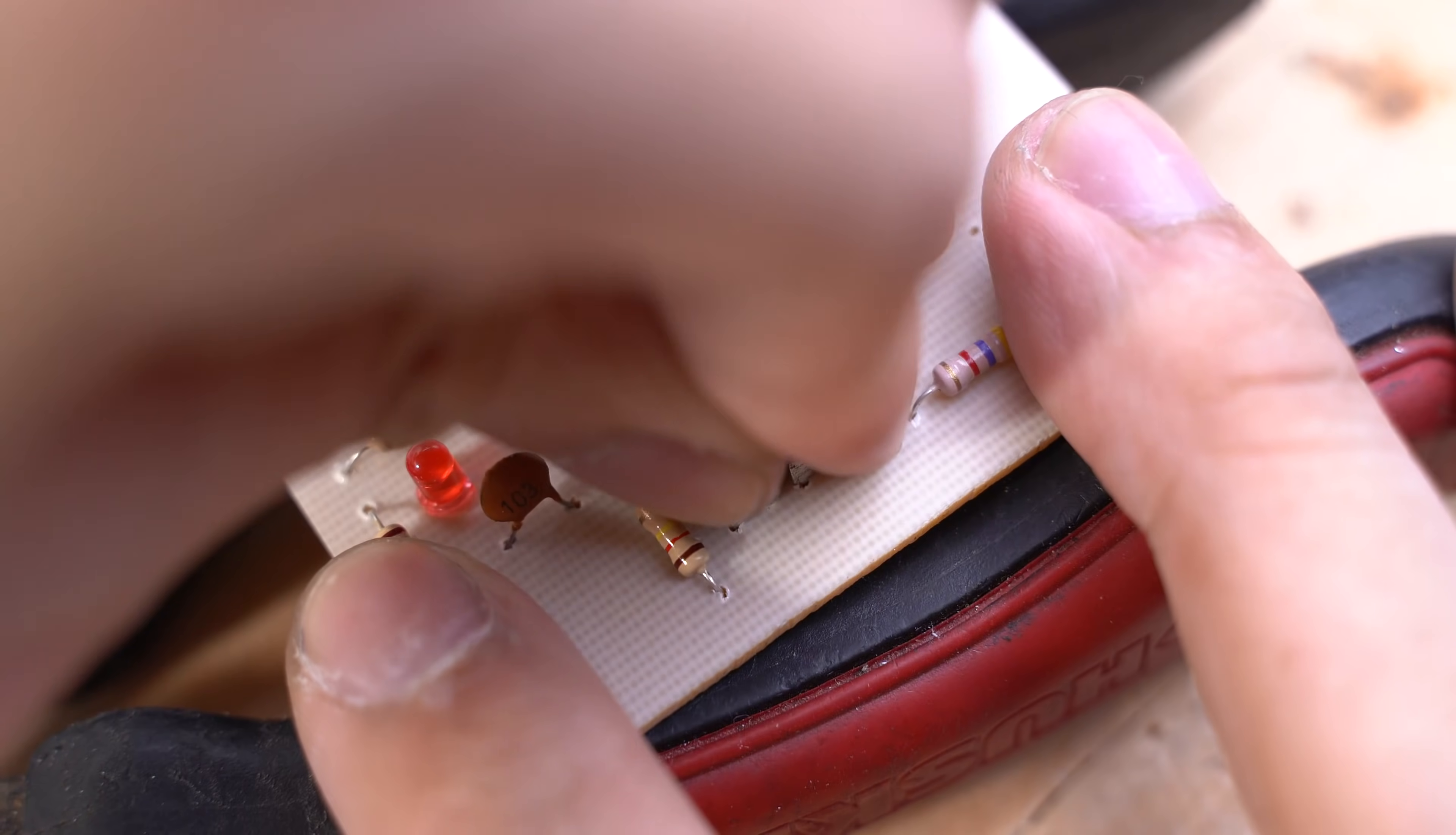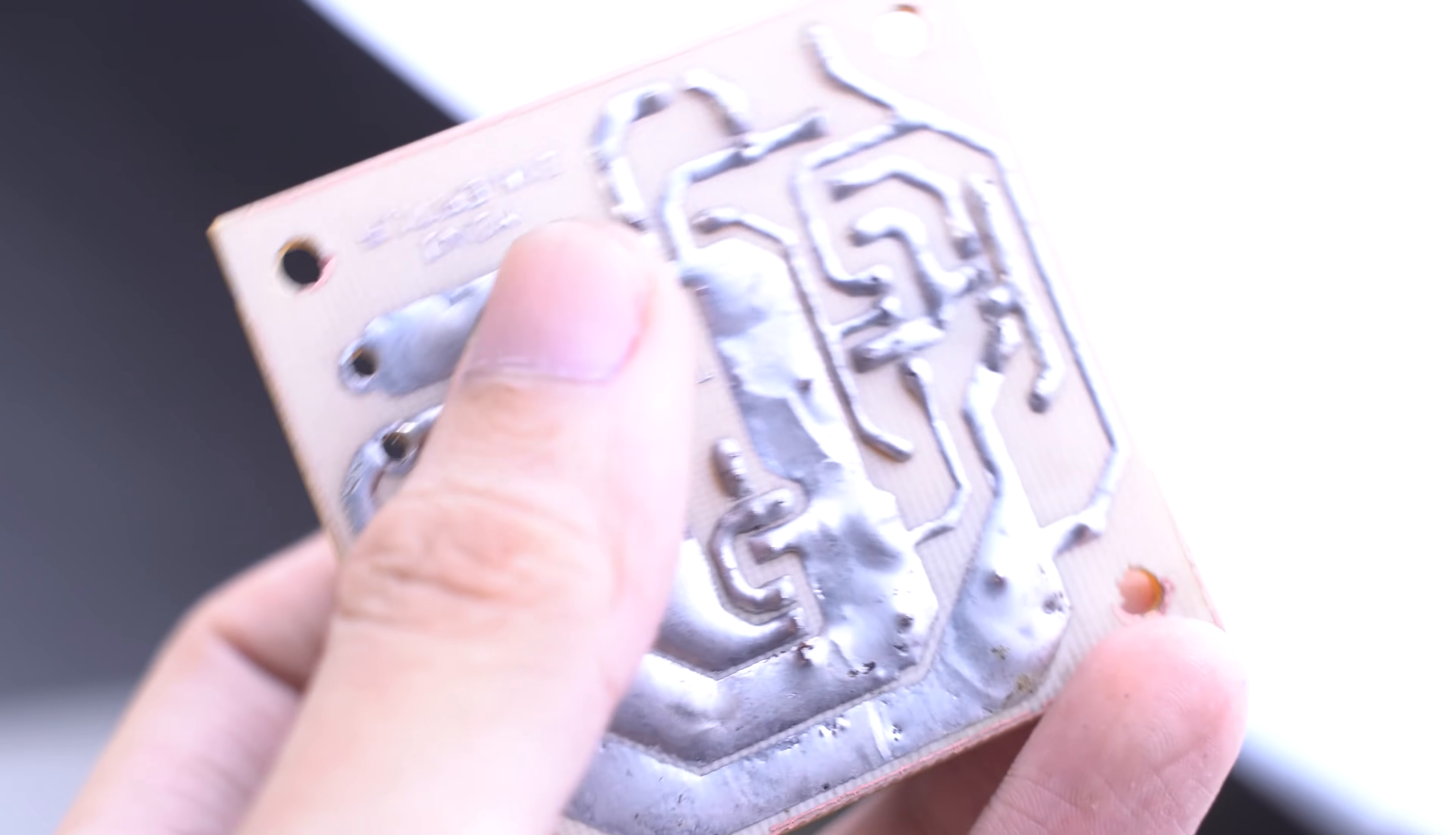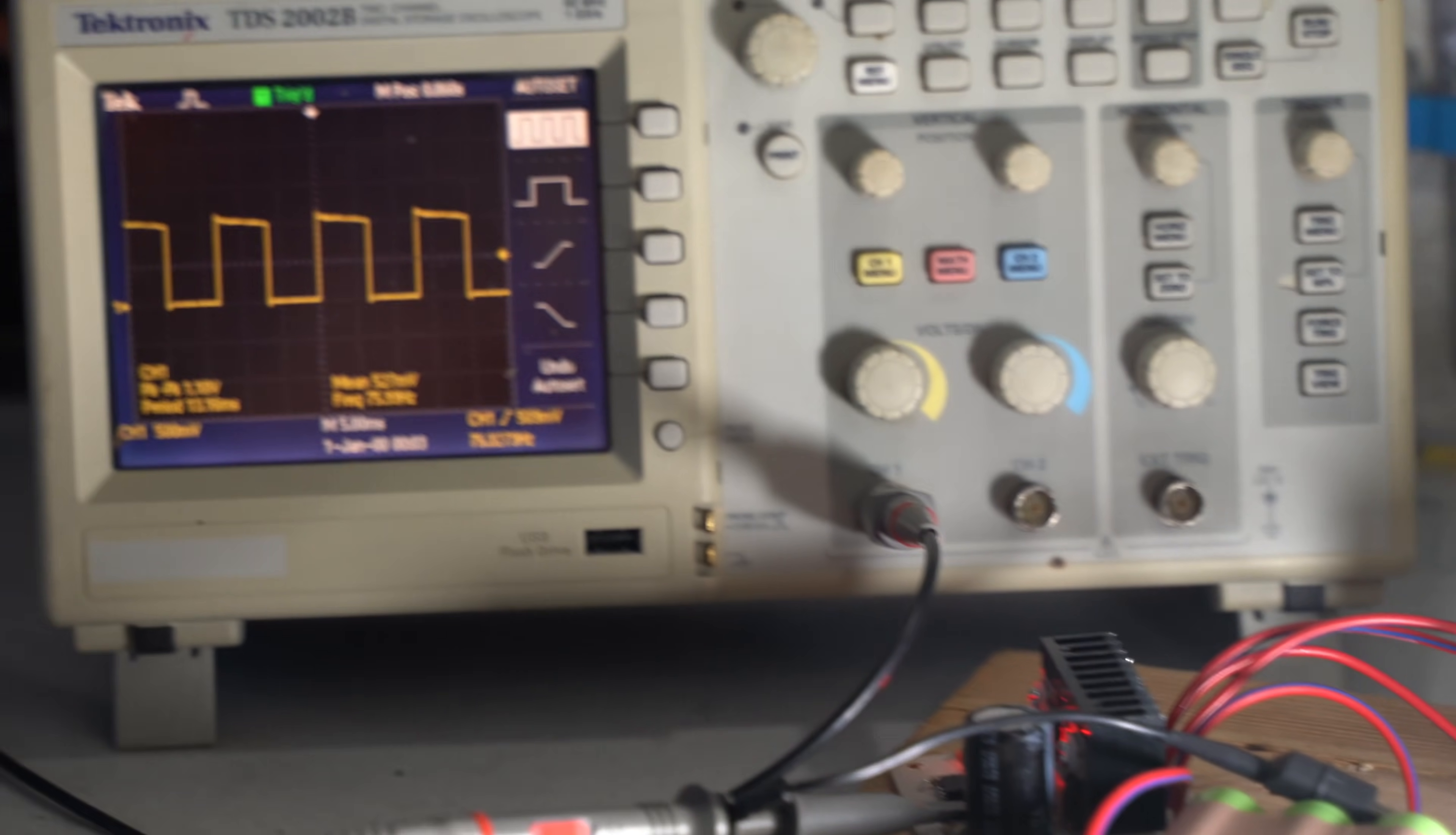But for those who are just building regular boards for through-hole components that do not require extremely thin lines, the dry film method is a nifty alternative from the toner transfer method. It has a lot of potential if done properly. I would have to be honest, my attempt on this one was pretty poor, so feel free to comment and share your tricks on dry film PCB fabrication. I hope you enjoyed this video. Thanks for watching.